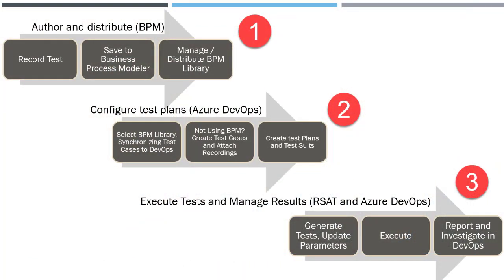The connection between DevOps and your task recordings is via the BPM — the Business Process Libraries — which exist in a cloud portal called Lifecycle Services (LCS). So the three major components which drive the whole RSAT tool are: Task Recorder, Business Process Libraries (BPMs) under LCS, and the DevOps test suite.